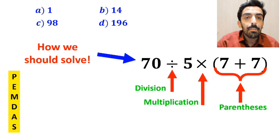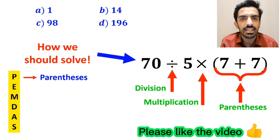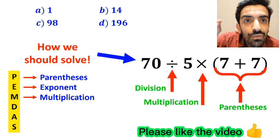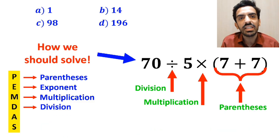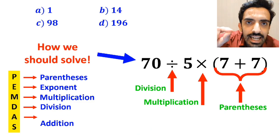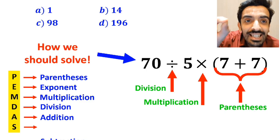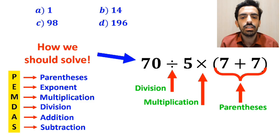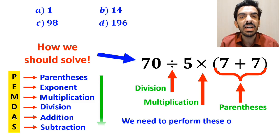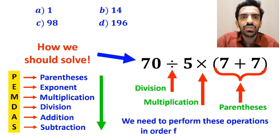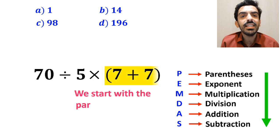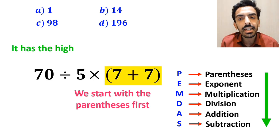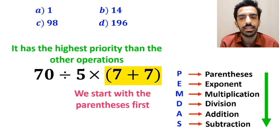In this rule, P stands for parentheses, E stands for exponents, M stands for multiplication, D stands for division, A stands for addition, and S stands for subtraction. We need to perform these operations in order from top to bottom. So we'll start with the parentheses first, because it has the highest priority over the other operations.